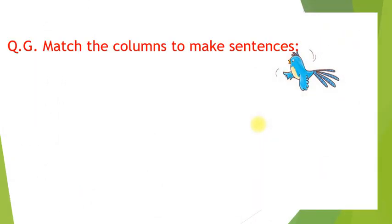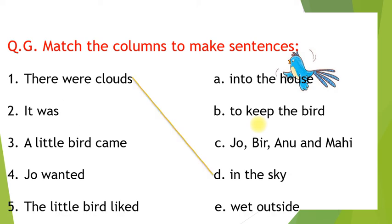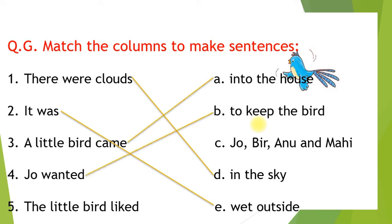Next question: match the columns to make sentences. Aapko match karna hai, sentence banana hai. First: there were clouds in the sky. It was wet outside. A little bird came into the house. Jho wanted to keep the bird. The little bird liked Jho, Biranu and Mahi.